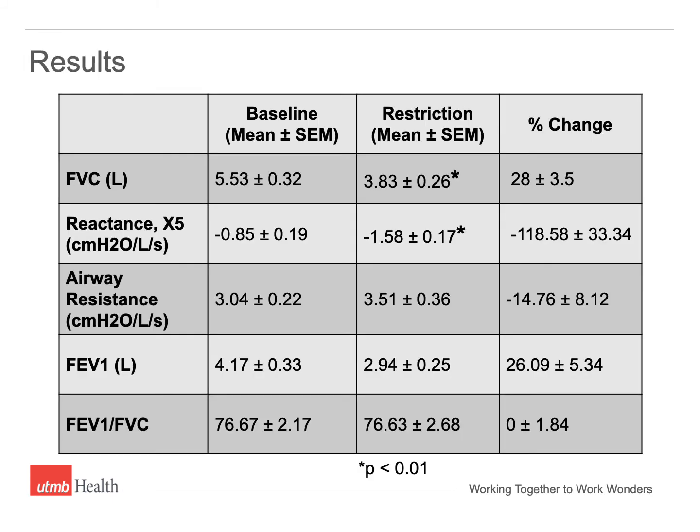The results show that there was a significant decrease in forced vital capacity between baseline and restriction, with a mean value of 5.53 liters without restriction and 3.83 liters with restriction. Similarly, the difference between lung reactants was also significant, with a mean reactants of minus 0.85 cm of water pressure per liter per second without restriction and minus 1.58 cm of water pressure per liter per second with restriction. Air resistance did not show any significant changes, with means of 3.04 cm of water pressure per liter per second without restriction and 3.51 cm of water pressure per liter per second with restriction. The difference between FEV1 and the ratio of FEV1 to FVC were also not significant between baseline and restriction. The ratio also shows that the volunteers did not have any evidence of obstructive lung disease.